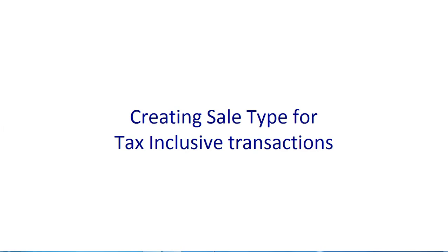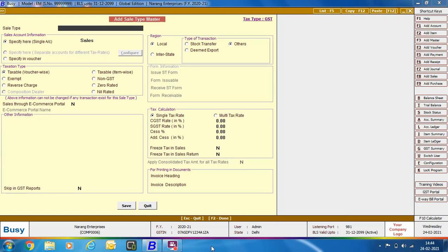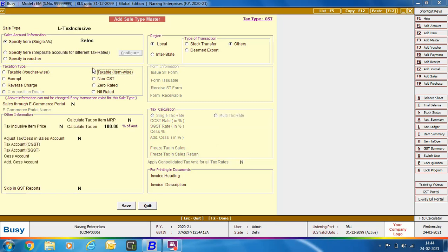Next, we will discuss creating Sale Type for Tax Inclusive Transactions. Tax Inclusive Transactions are those in which the item's price already contains the tax amount. BUSY performs a reverse calculation to segregate the taxable amount and the tax amount from the item amount specified in the voucher. We are specifying the Sale Type name as L-Tax Inclusive. In the Taxation Type group, we are selecting Taxable Item-Wise. Region is Local. In the Other Information Group, we are specifying Yes in the Tax Inclusive Item Price option.